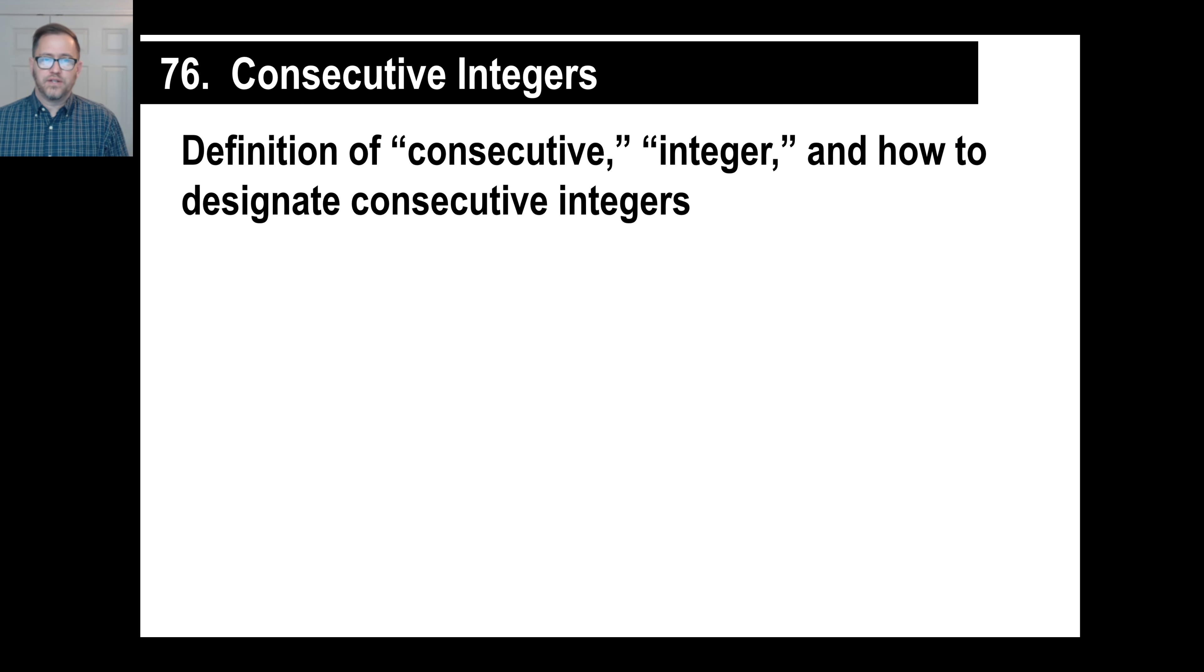Hey guys, let's look at consecutive integers. First off, let's understand the title. We don't want to just go through a title without even knowing what it means. Consecutive means in a row. In other words, you have two numbers that are in a row: 7, 8, 9, 10, and so on.